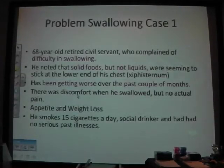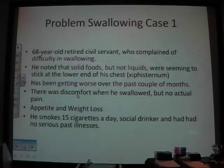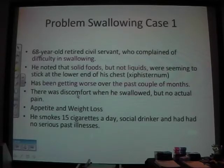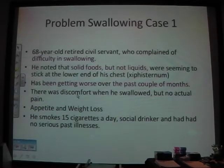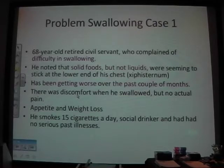Investigations: OGD (oesophagogastroduodenoscopy), barium swallow, CT thorax for staging. Why do a CT? To see if there are metastases — liver involvement — staging is really important. For investigations in general, use a system: blood tests, imaging, and functional tests like barium swallow.